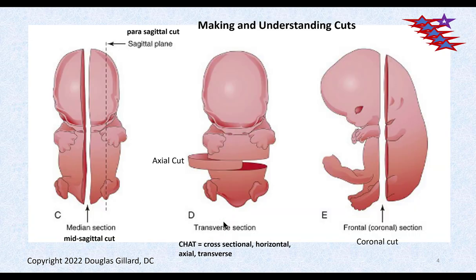Let's talk about cuts. These are embryology cuts using a chicken embryo. If you take a cut right down through the crown of the head, the nose, the belly button — that's called a mid-sagittal cut. It creates a sagittal plane. If it's right down the middle it's mid; if you cut off to the right or left, that's called a parasagittal cut.